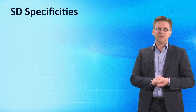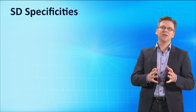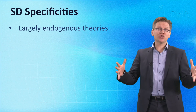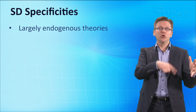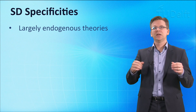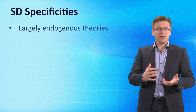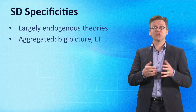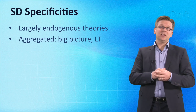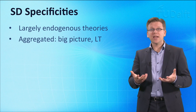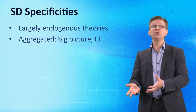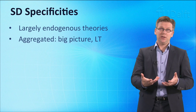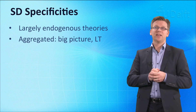So what's specific about system dynamics? System dynamics models are largely endogenous theories — that is, model boundaries are chosen such that all the important feedback loops are within these boundaries. System dynamics models are also rather aggregated. Stock variables are often used to group rather homogenous individuals or items. This also means that we need to make sure the aggregation assumption holds in order to be able to use system dynamics modeling. If the aggregation assumption holds, then system dynamics has an advantage over less aggregated methods.